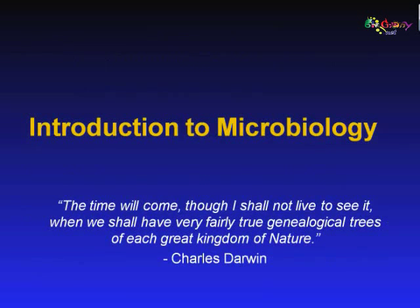Before jumping into the first topic, which focuses on basic microbiology, I would like to point out a nice quote from Charles Darwin, whose name you may recognize as being the founder of the theory of natural selection. Darwin realized that all species of life have evolved over time from common ancestors. He published compelling supporting evidence of this in his 1859 book On the Origin of Species, where he presented his scientific theory of natural selection, which is responsible for the branching pattern of evolution.